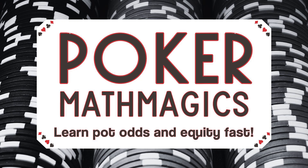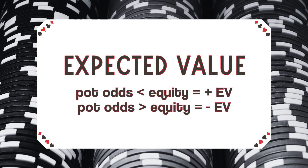Making mathematically smart decisions in poker is easier than you think. To determine if a decision you face is plus EV — expected to win money in the long run — or negative EV — expected to lose money in the long run — you only need to know two calculations: pot odds and equity. If the pot odds are less than the equity, it is a plus EV decision. If the pot odds are greater than the equity, it's a negative EV decision.